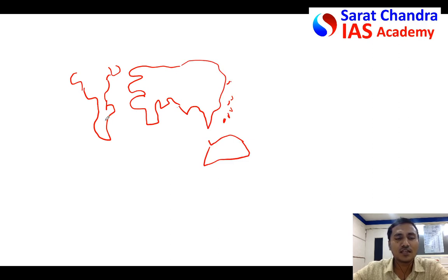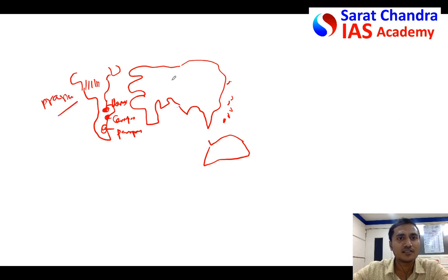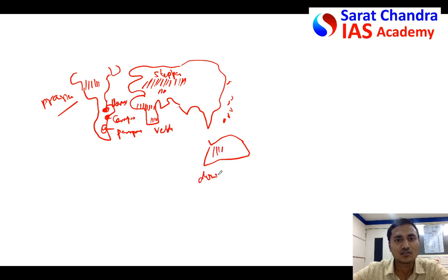If you know the names, you can showcase your knowledge. You can say this place — Llanos — in Venezuela and in Brazil we have Campos. In Argentina you have got the Pampas. Grasslands are called with different names in different countries. For example, in the North American area it's called Prairies; in Central Asia and Europe it's called Steppes; in Hungary it's called Puszta; in northern Africa it's called Savannah; in southern Africa it's called Veld; in Australia it's called the Downs. Even India has grasslands in and around Rajasthan.